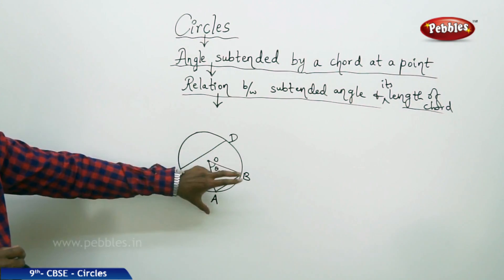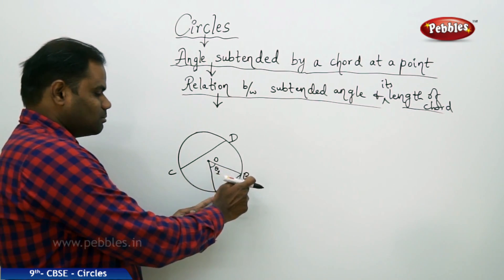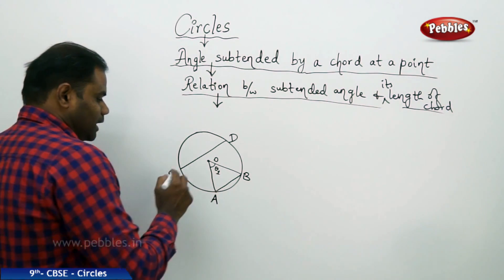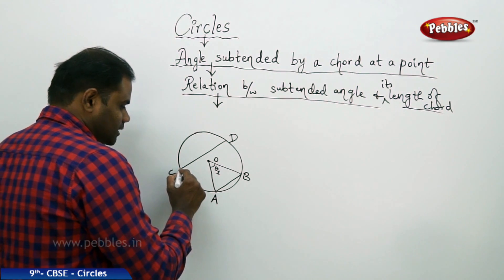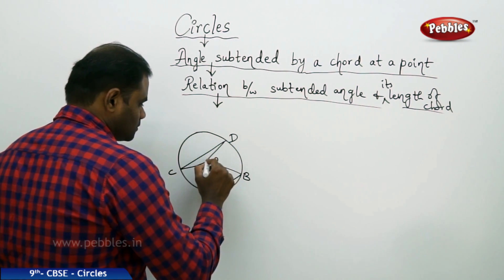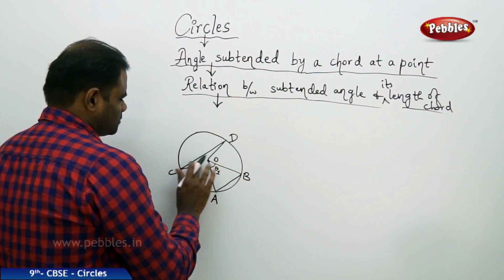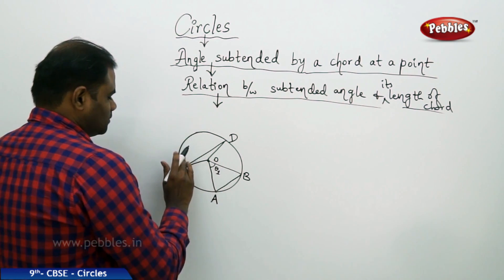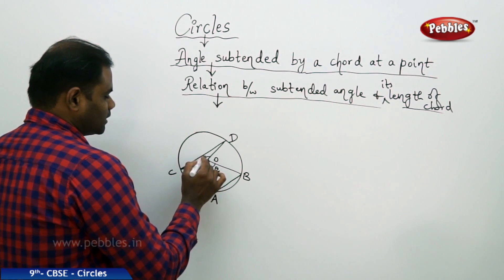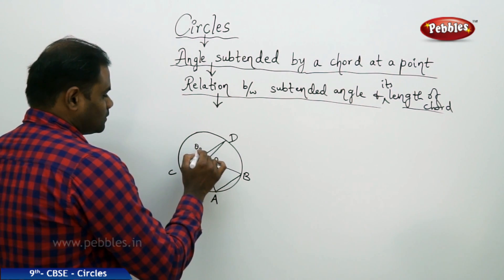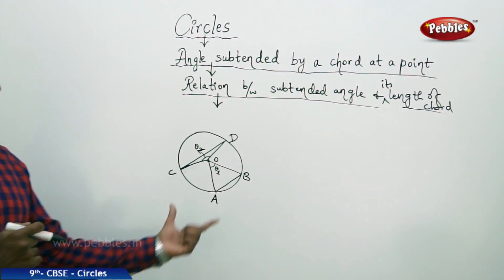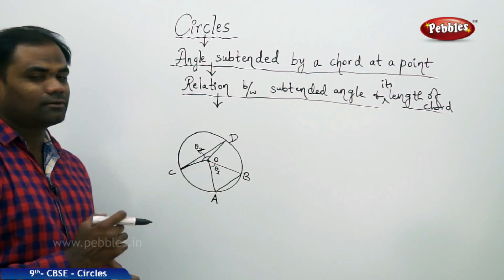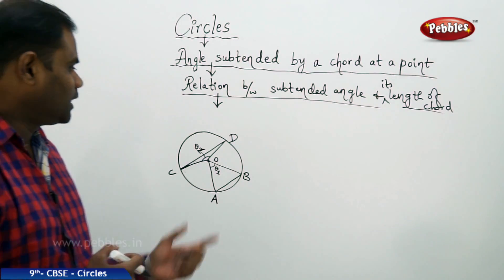There is another chord CD which is bigger in length. We can clearly see that chord AB is smaller than chord CD. The angle subtended by chord CD at the center of the circle is theta 2. So, angle subtended by chord AB at the center is theta 1, and angle subtended by chord CD at the center is theta 2. We now have two angles to compare.